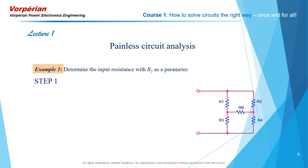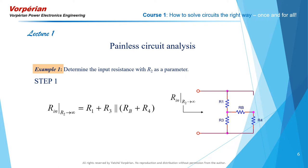Step 1: Take R2 out as an open circuit. Next, determine the input resistance with R2 out of the circuit. And this we can write by inspection as R1 plus R3 in parallel with Rb plus R4.